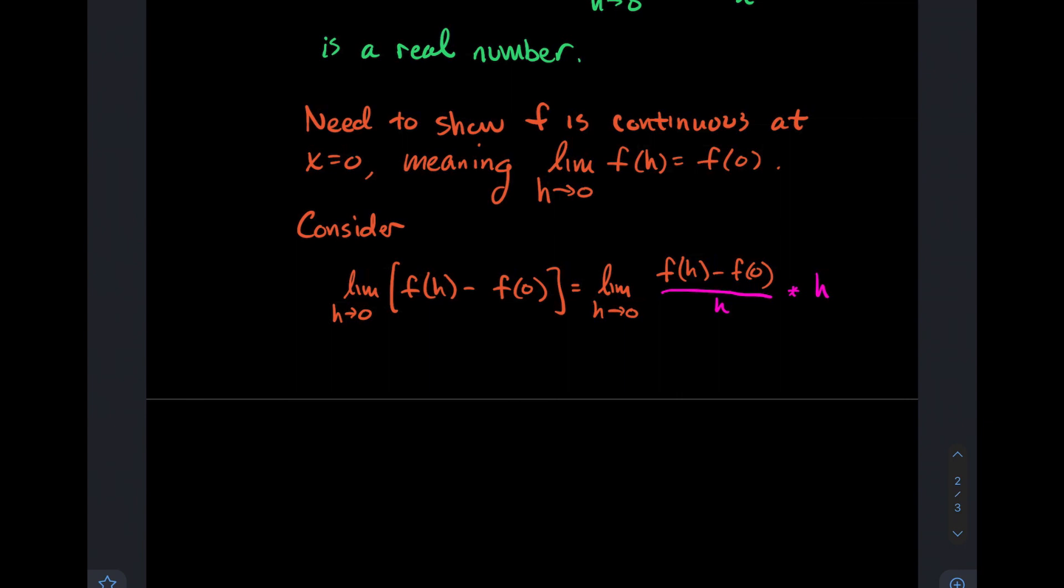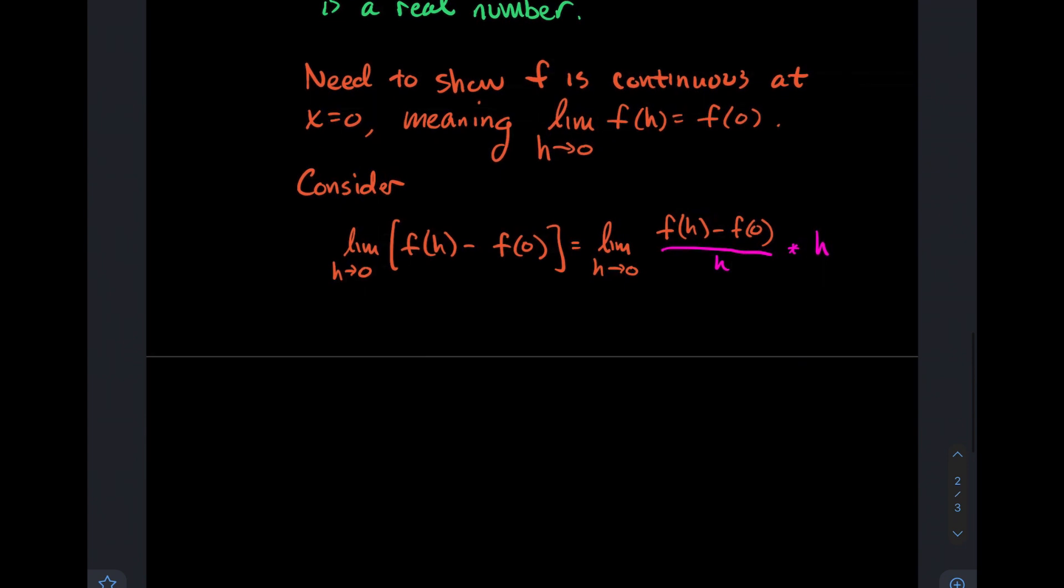We're taking the limit as h goes to 0, though. Remember, the idea with that limit there is that I'm not ever assuming that h is actually equal to that value that it's getting close to. I'm assuming that h is just a number that is incredibly close to 0. So you shouldn't lose any sleep. We are not dividing by 0 here.